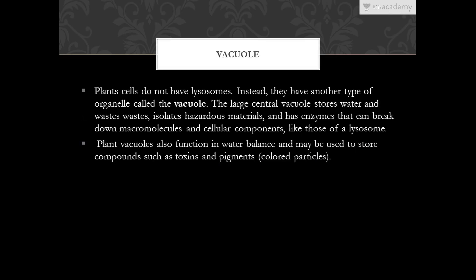Plant cells do not have lysosomes. Instead, they have another organelle called the vacuole. The large central vacuole stores water and wastes, isolates hazardous materials, and has enzymes that can break down macromolecules similar to a lysosome. Plant vacuoles also function in water balance and may store compounds such as toxins and pigments.